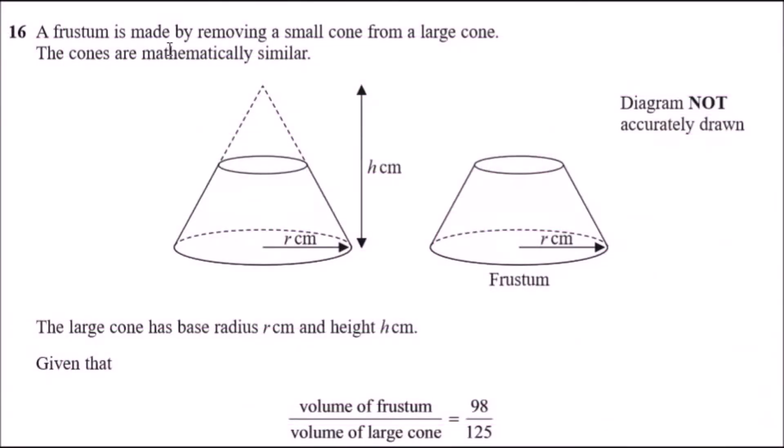A frustum is made by removing a small cone from a large cone. They literally took off the tip. However, they are mathematically similar, which means they're proportionally different - they have the same shape but just different in proportion.